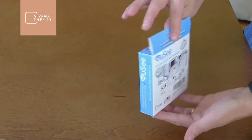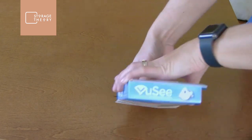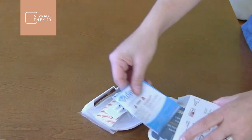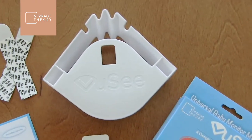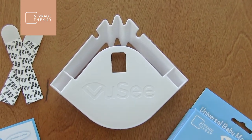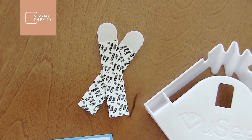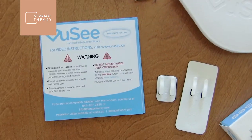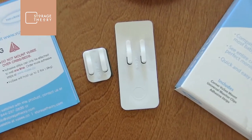This is the unboxing of the Vue-Sea corner. Inside you will find the Vue-Sea corner base, two adhesive strips, the instruction manual, and two universal clips, large and small.